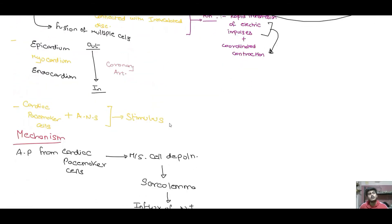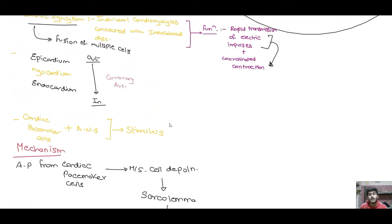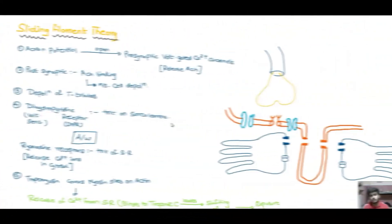The three coverings of the heart are the epicardium, the myocardium, and the endocardium, from the outside inward. The cardiac muscle cells are stimulated with the help of the cardiac pacemaker cells and the autonomic nervous system (ANS).